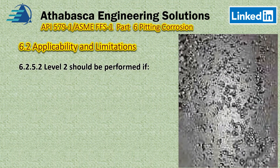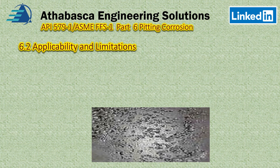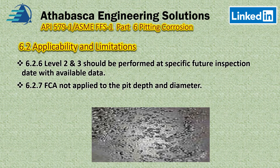A few more points: if a pitting comparison chart is not available, you should be doing a Level 2 assessment. If there is widespread pitting throughout the part, also consider a Level 2 assessment. Per section 6.2.6, Level 2 and 3 evaluations should be performed at a specific future inspection date with available data. The future corrosion allowance, FCA, should not be applied to the pit depth and the diameter.